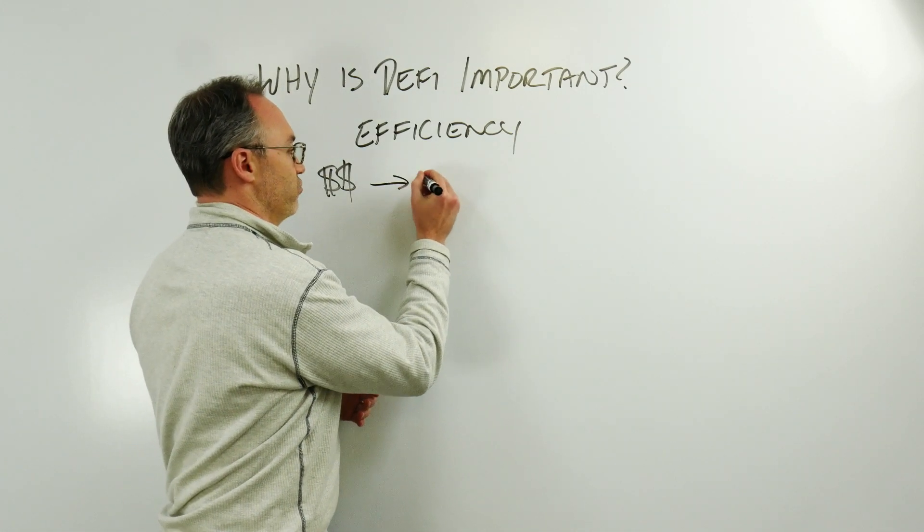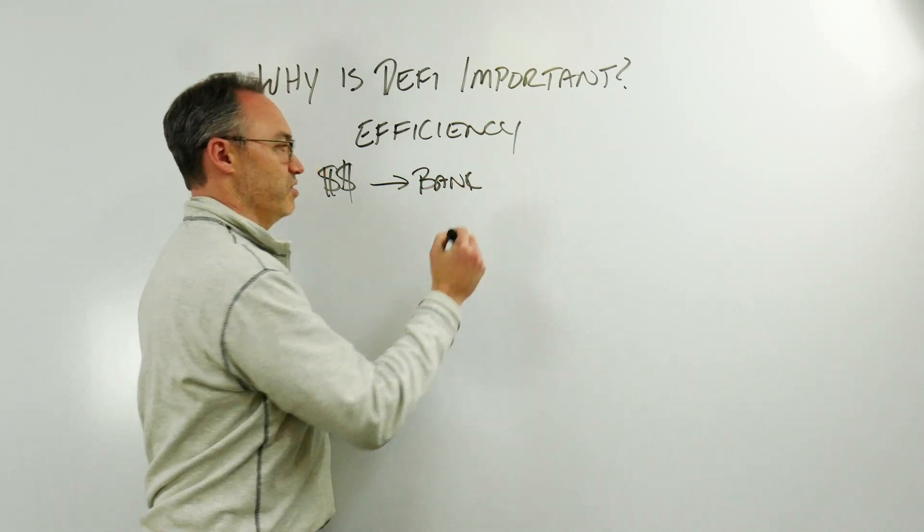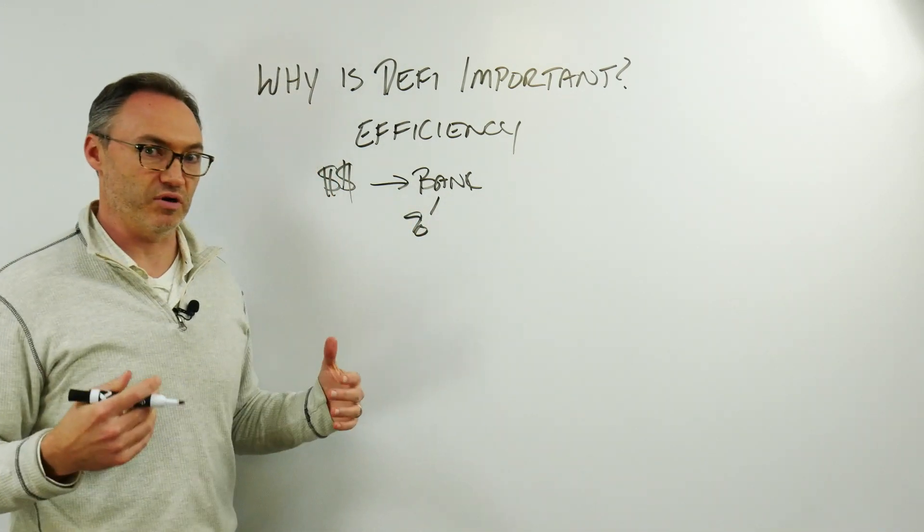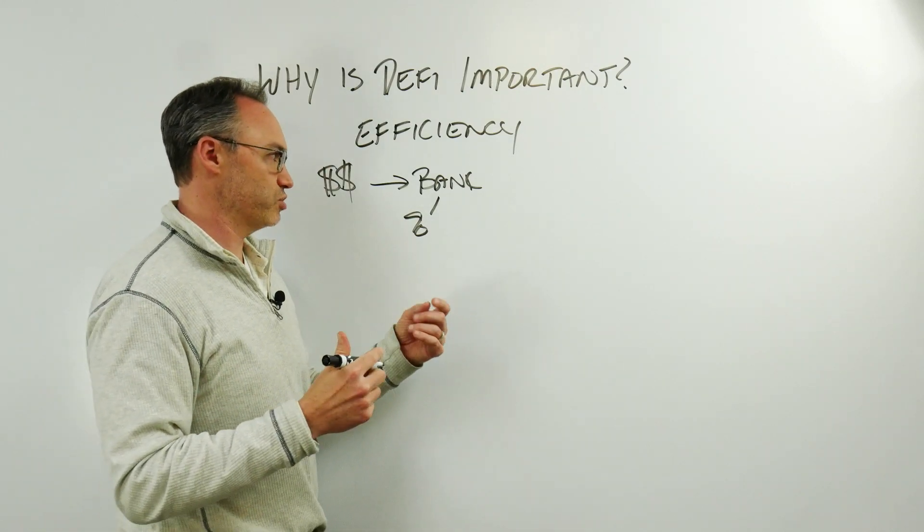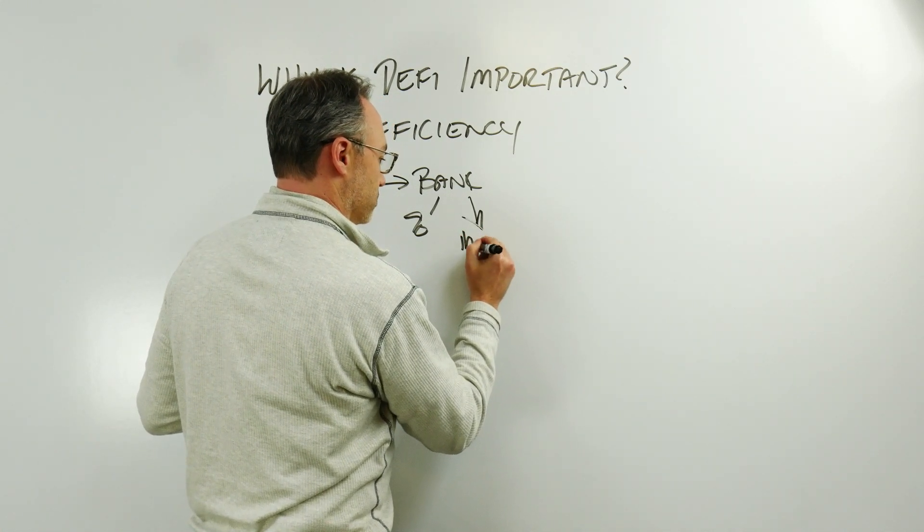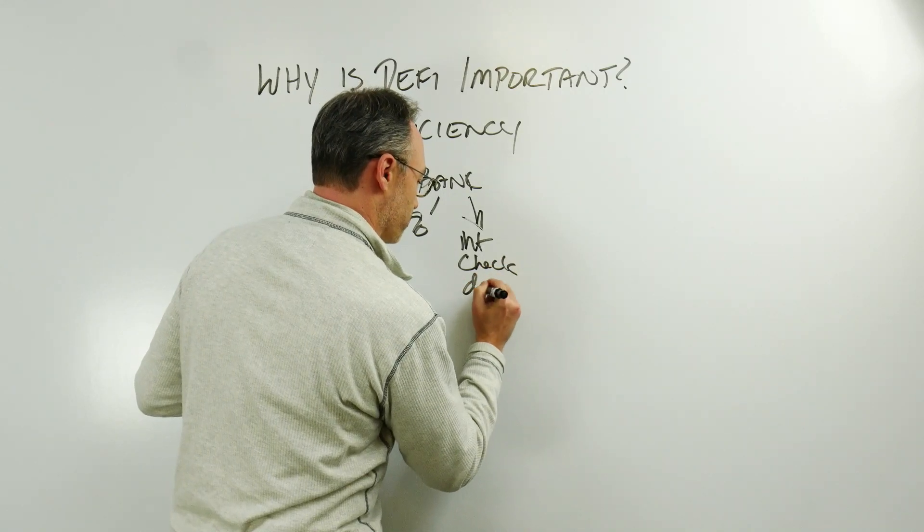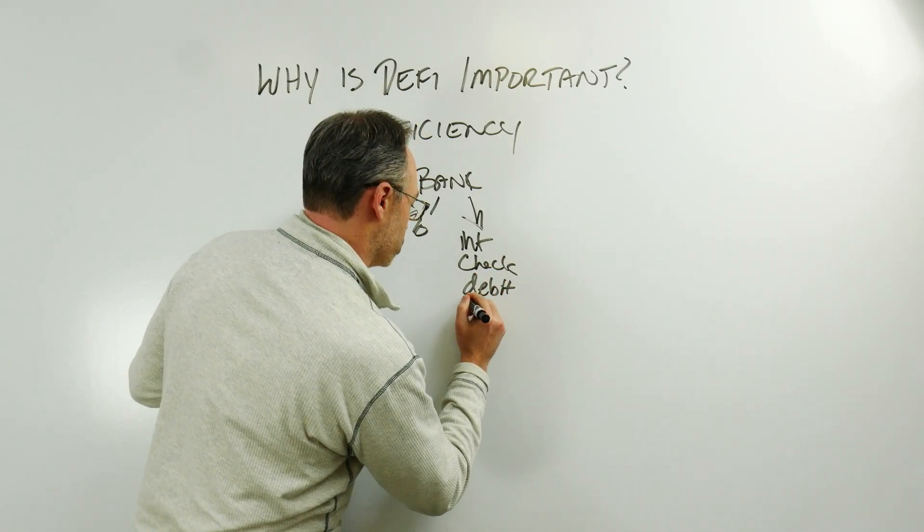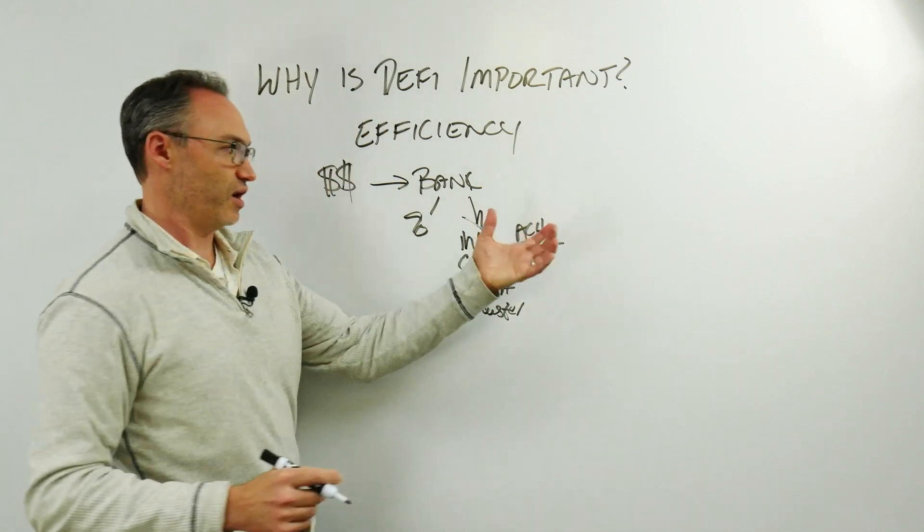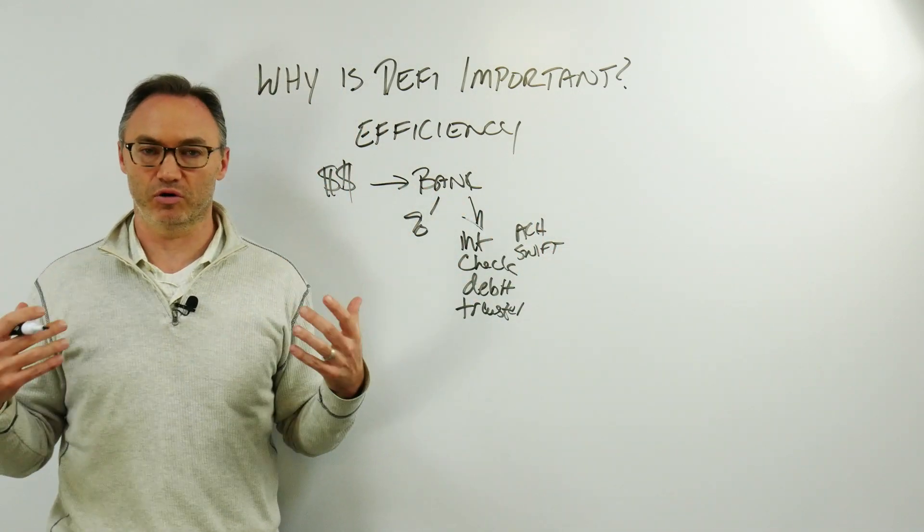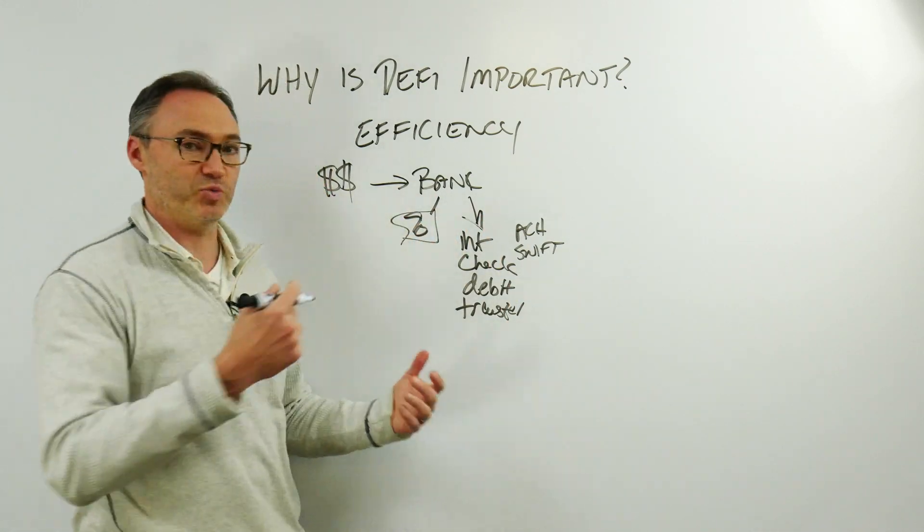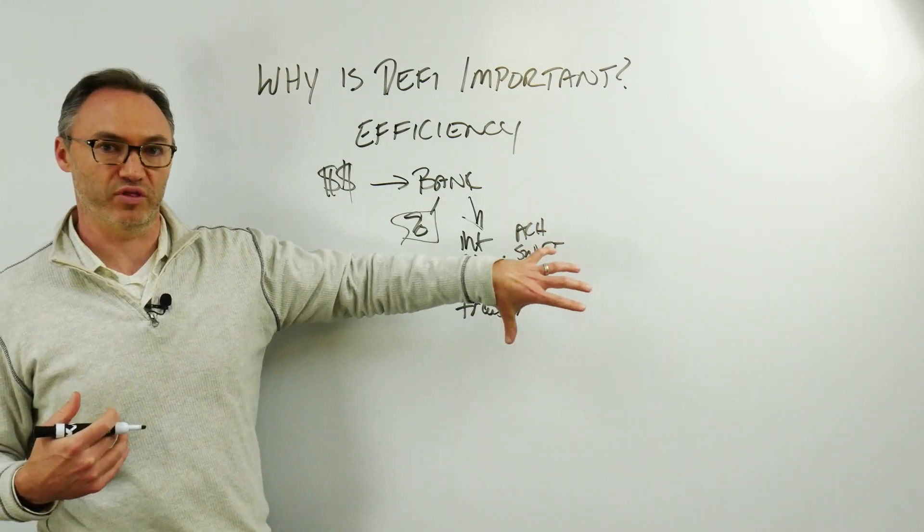Now I can move that to potentially a bank account. Maybe this is a little bit more efficient because the bank account maybe pays me a little interest, although they're not going to be doing very much of that for any time in the near future. But what it does is from the bank now I can disperse it. I can pay for things using the internet, I can write a check, I can use my debit card, I can transfer around the world using ACH or SWIFT. All these ways that I can now transact with that money and it's become a little bit more efficient. I can do more things with it now.